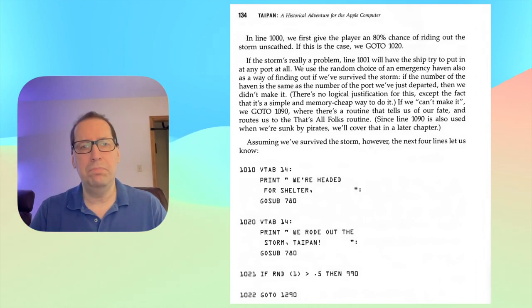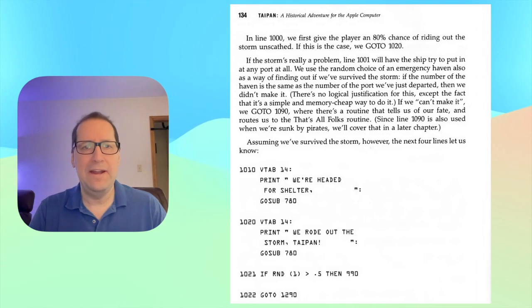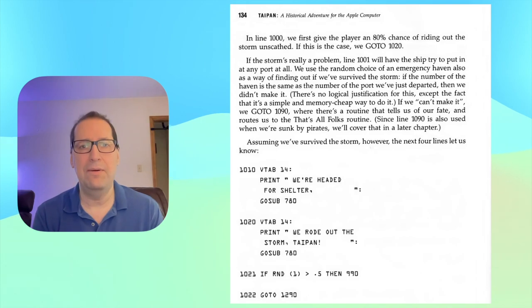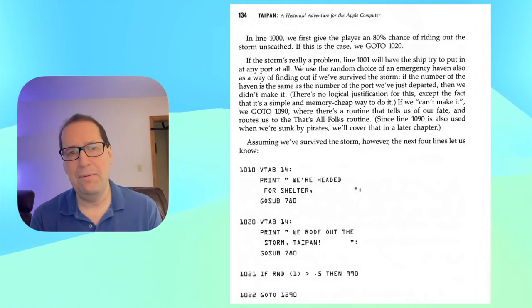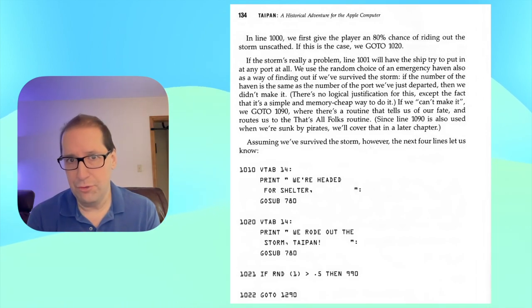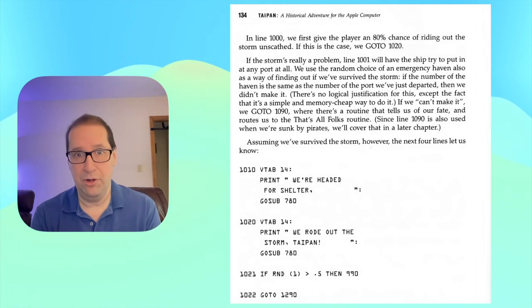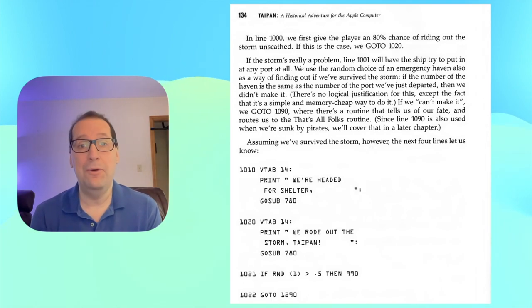The book also pulls the curtain back around certain game strategies. Taipan encourages you to buy guns for your ships to try to fight the pirates. But looking at the code, it's clear that the pirate fleets will always grow faster than your ability to strengthen your ship. This suggests that optimal play strategy is in fact to avoid trying to become stronger at fighting and just focus on trading, and run like a coward whenever you're forced into combat.